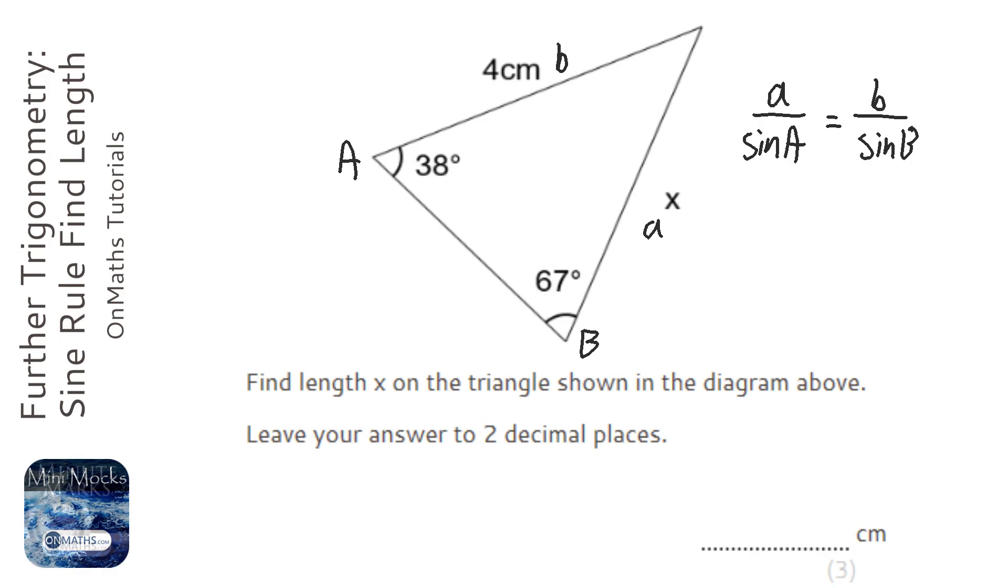Let's substitute in the values. So we've got x over sine 38 equals 4 over sine 67.